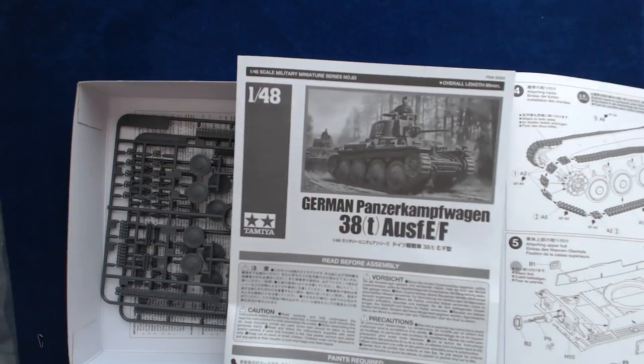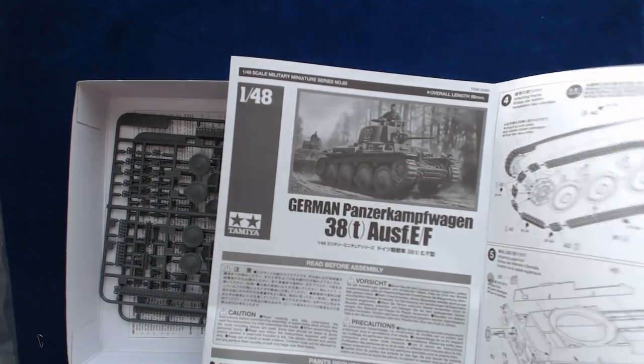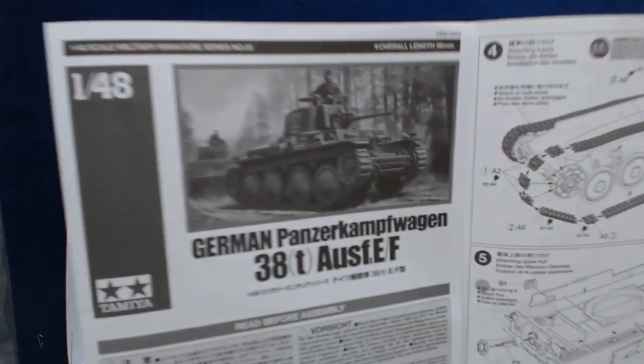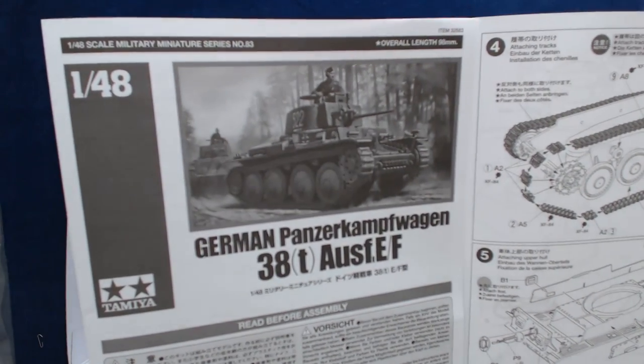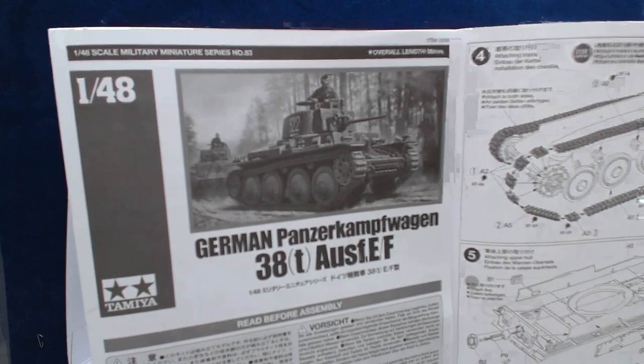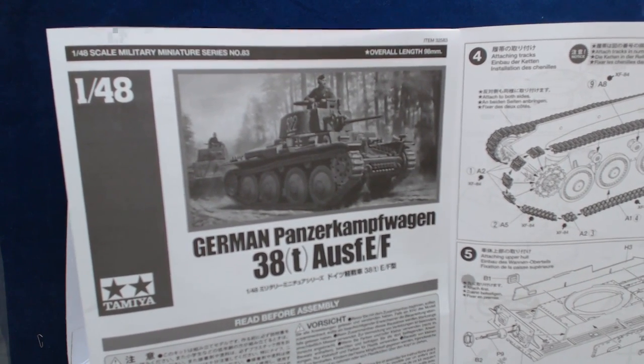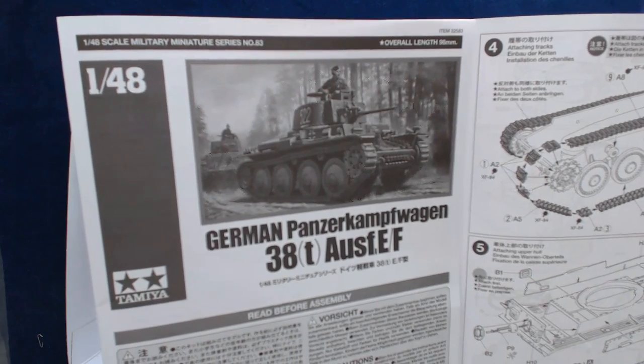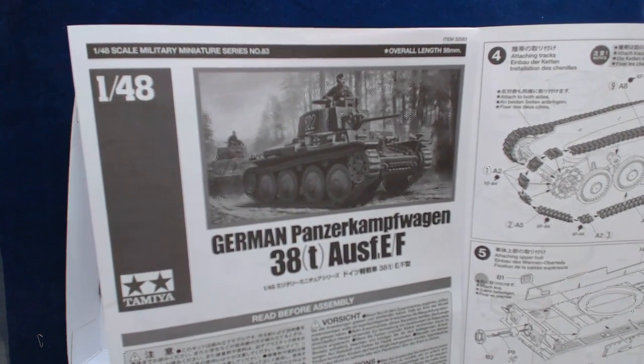Instructions. So you've got main instructions here, which show you recommended tools, paints required, the read before assembly. Caution, read carefully and fully understand the instructions before commencing assembly. A supervising adult should also read the instructions if a child assembles the model.